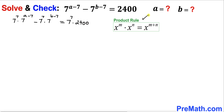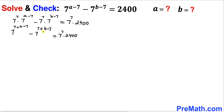Now let's recall the product rule of exponents and apply it on the left hand side. This gives us 7 power 7 plus a minus 7, minus 7 power 7 plus b minus 7, equals 7 power 7 times 2400. On the left hand side, the positive 7 and negative 7 cancel out in both terms, so we end up with 7 power a minus 7 power b.